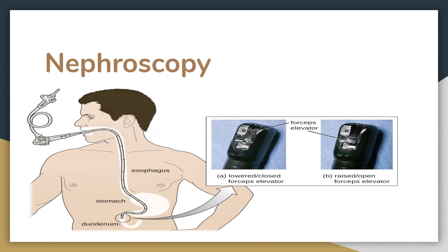A nephroscopy is basically a non-invasive or non-surgical way of examining the inside of the kidneys, and it helps to also treat certain conditions in the upper urinary tract. Nephroscopies are done usually with a small instrument called a nephroscope — a thin, flexible tube. Part of it is inserted into the skin, or you can insert it in the mouth, and it goes all the way down to perform its examinations.